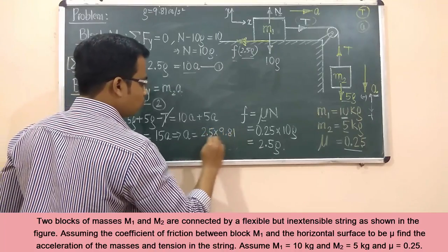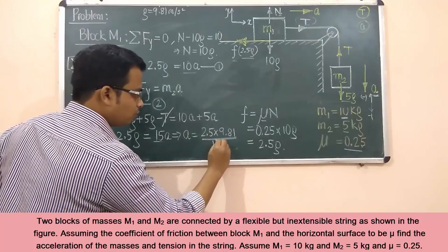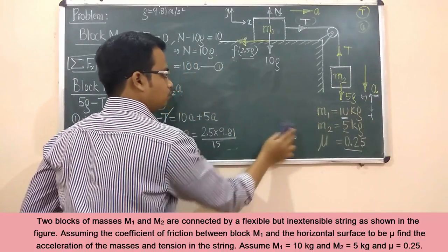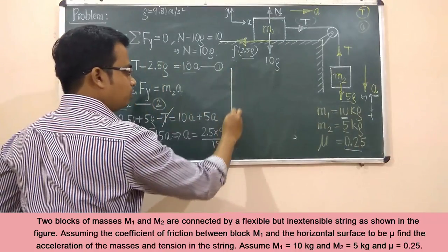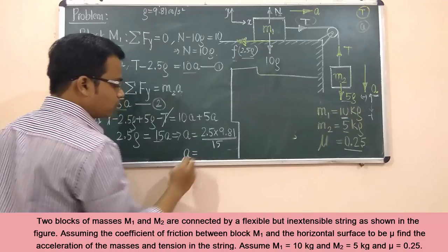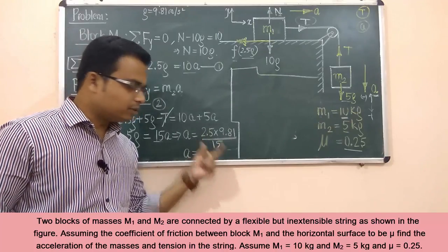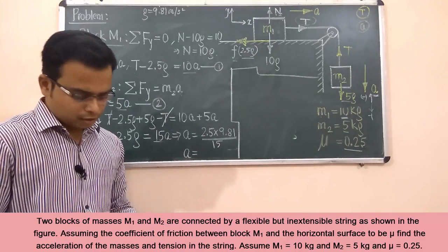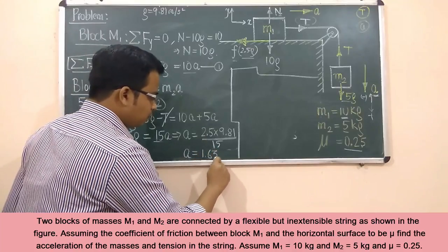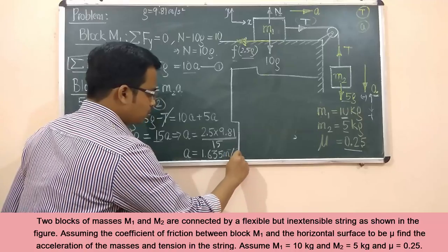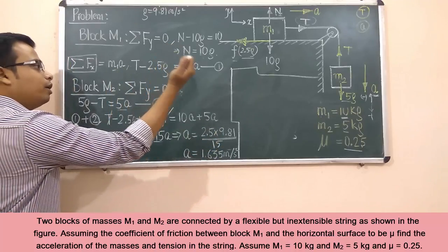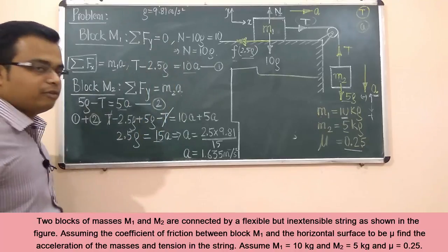So acceleration a = 2.5g divided by 15. Substituting g = 9.81 m/s²: a = (2.5 × 9.81) / 15, which works out to approximately 1.635 meters per second squared. That's the value of acceleration for the system.